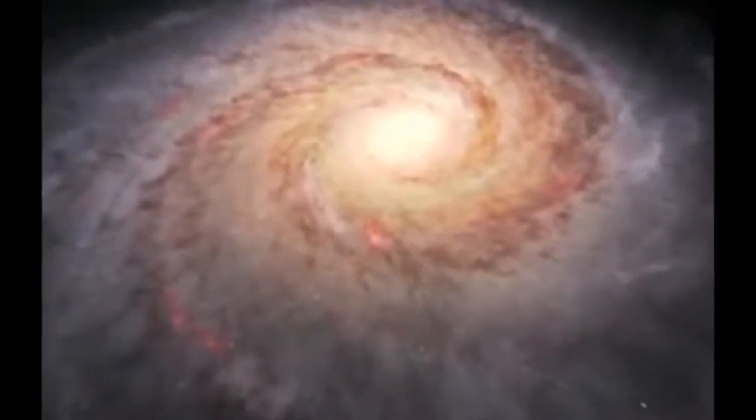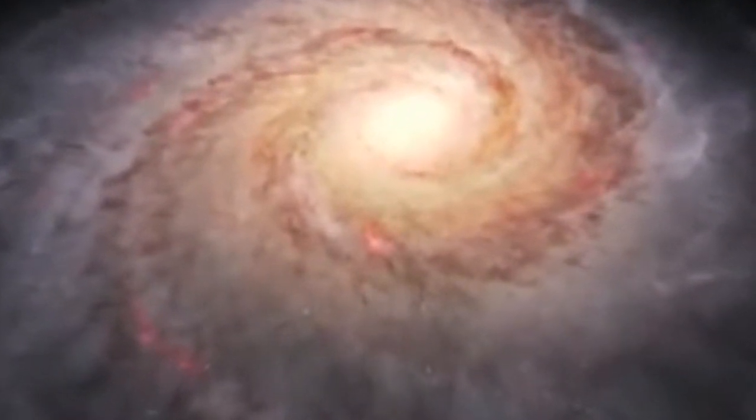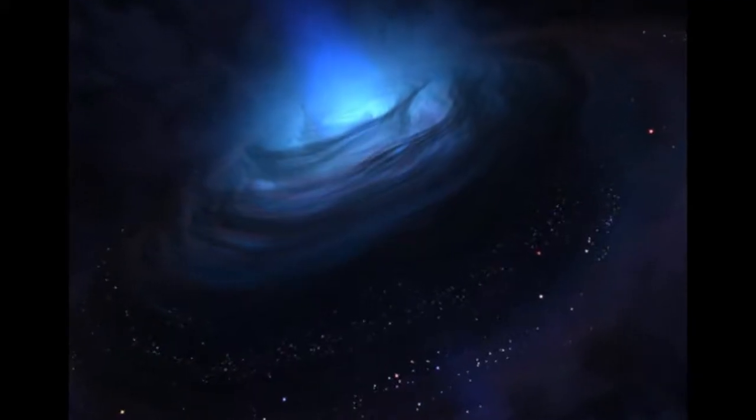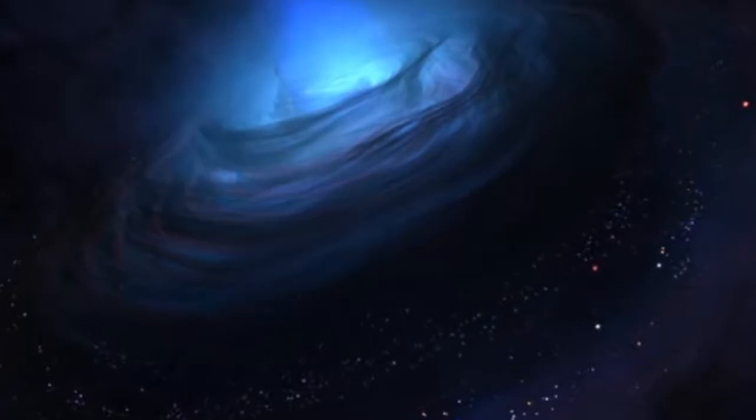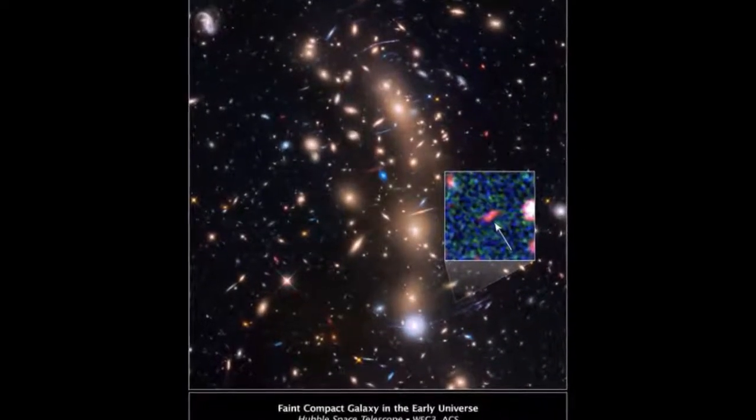NASA's Spitzer and Hubble telescopes have been previously combined to locate galaxies even further away. But TINA represents a smaller sort of developing galaxy that up until this discovery had evaded detection.